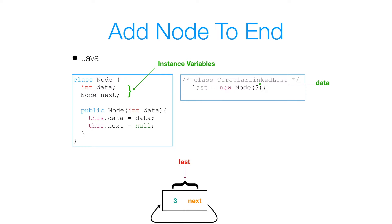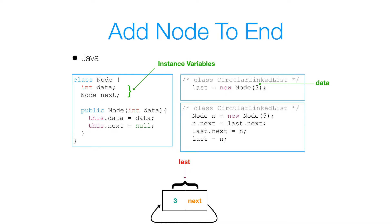Now let's get to adding a node to the end of the list. Since our list is empty, to add a node to the end of the list we set our last equal to new node and pass in the data we want to add — so I pass in 3. Then, if we want to add another node to our existing list, the first thing we do is create the node we want to add, with data 5 in this case.